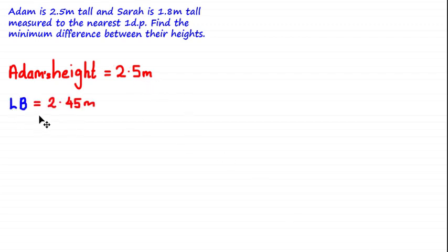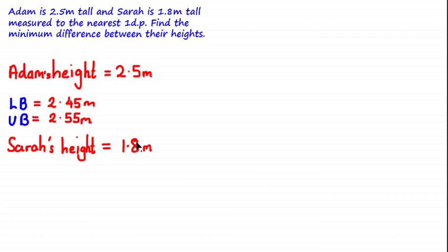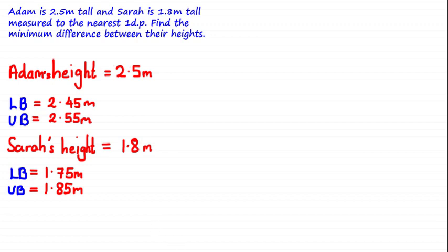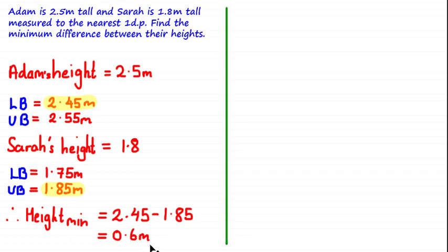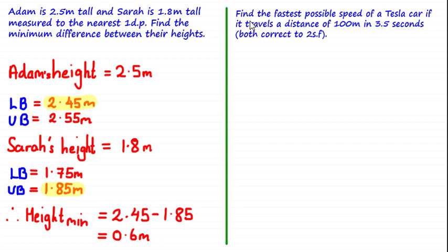Adam's height was rounded to 2.5 meters, so the lower bound of his height is 2.45 meters and the upper bound is 2.55 meters. Sarah's height was rounded to 1.8 meters, so the lower bound is 1.75 meters and the upper bound is 1.85 meters. To find the smallest difference, we subtract the largest possible value for Sarah from the smallest possible value for Adam: 2.45 minus 1.85 gives a minimum difference of 0.6 meters.